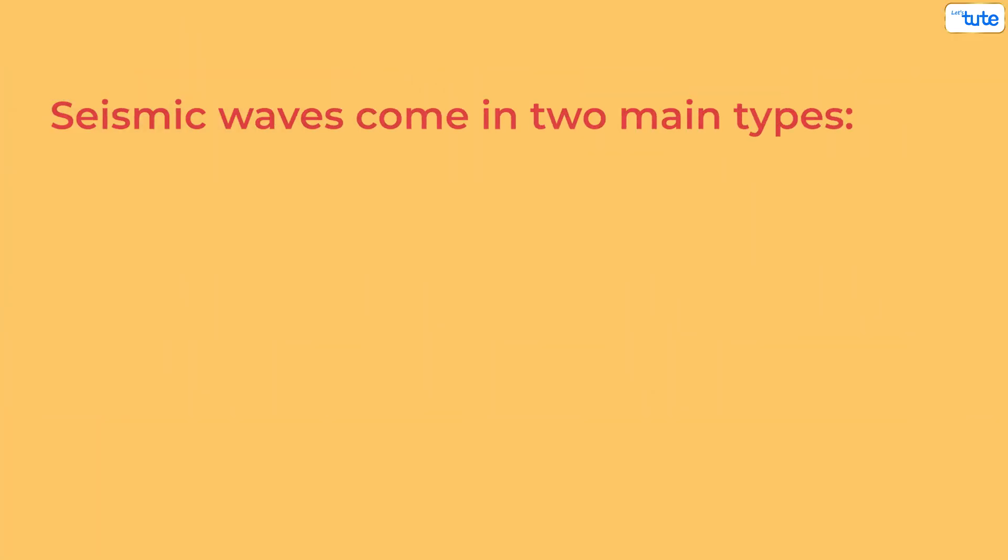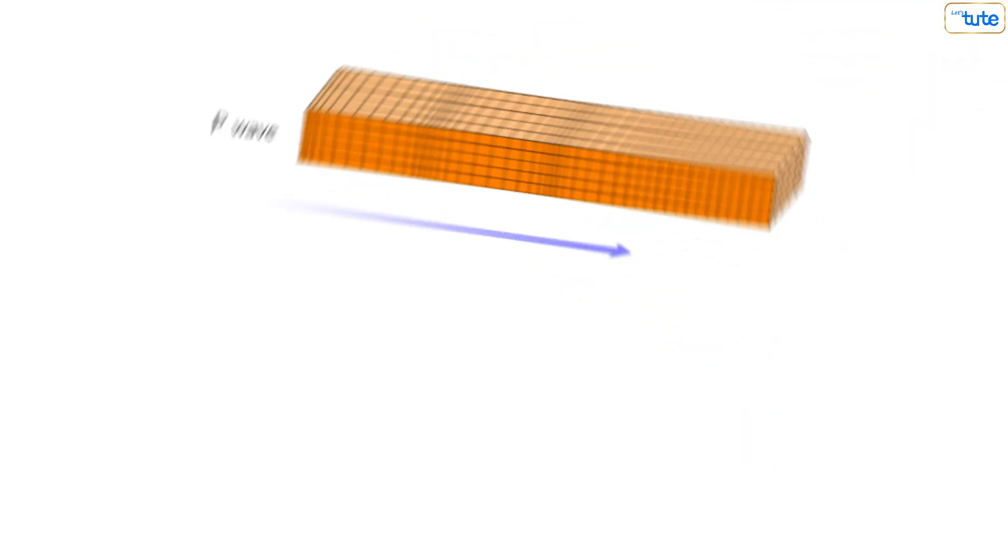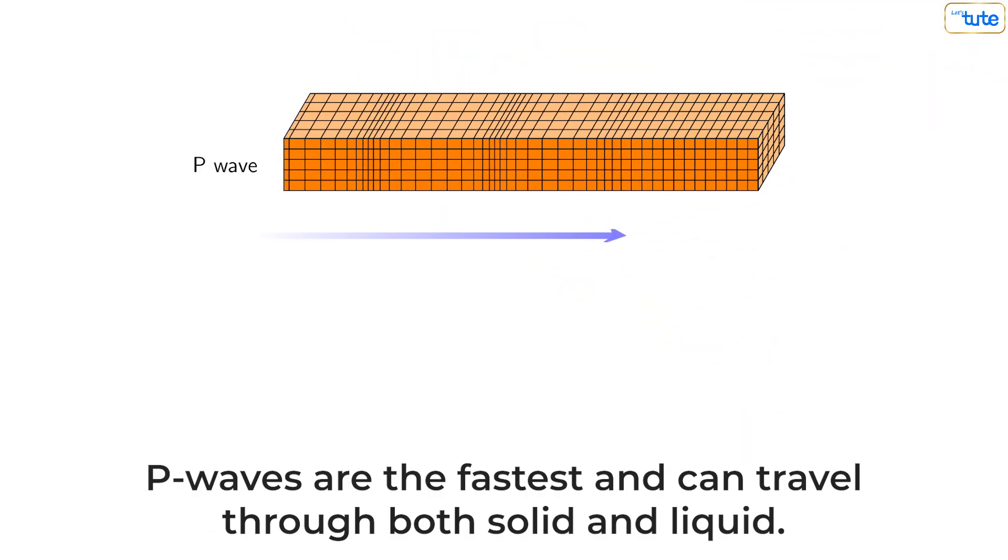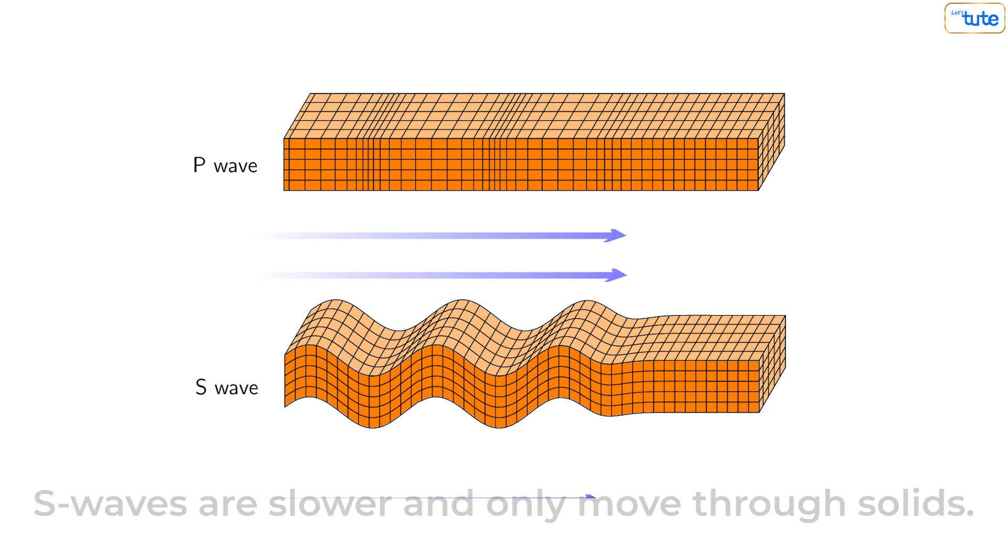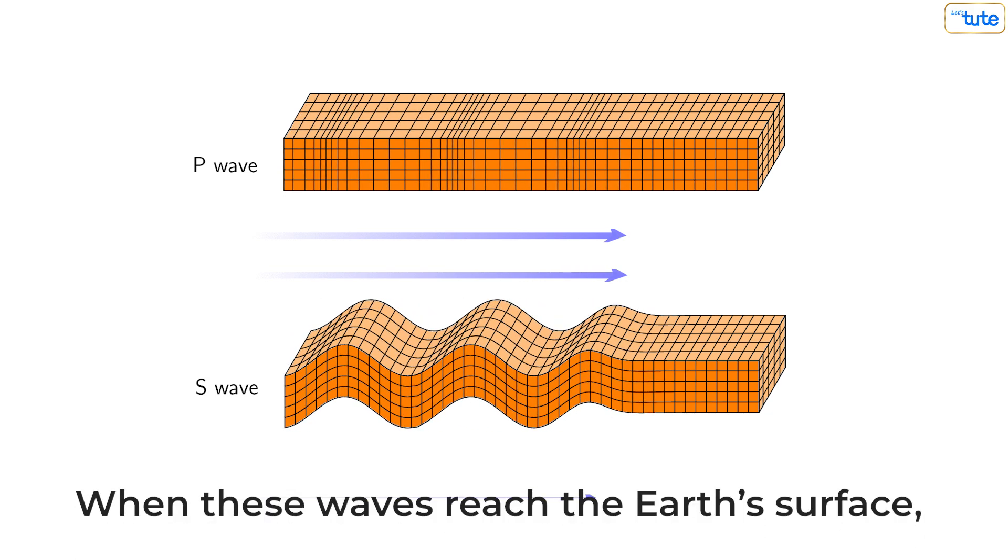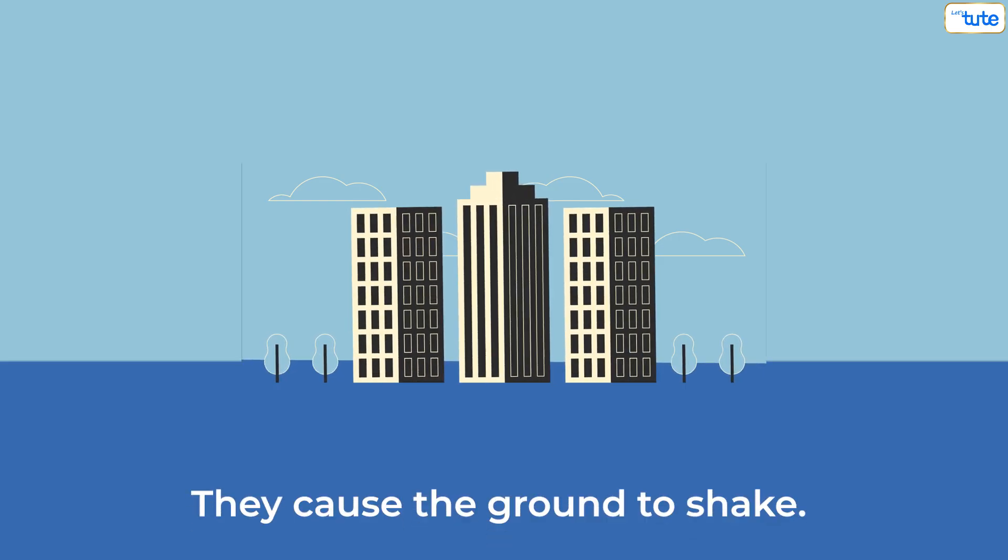Seismic waves come in two main types: primary P waves and secondary S waves. P waves are the fastest and can travel through both solid and liquid, while S waves are slower and only move through solids. When these waves reach the earth's surface, they cause the ground to shake.